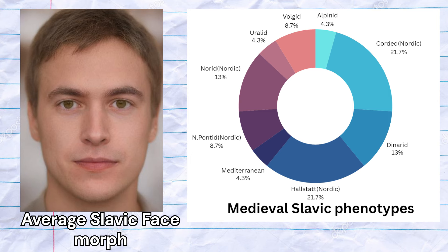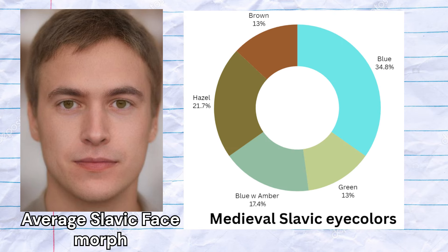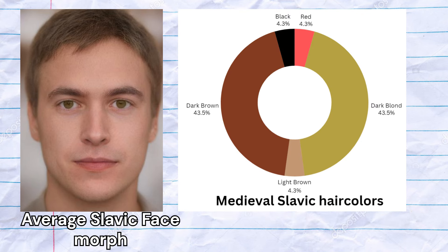Here is a morph of the average predicted phenotype. The most common predicted eye color was blue, but the majority of the samples did not have blue eyes. The second most common eye color was hazel. The most common predicted hair colors were dark blonde and dark brown. One sample was predicted to have red hair, one was predicted to have light brown hair, and one was predicted to have black hair. No samples were predicted to have light blonde hair.